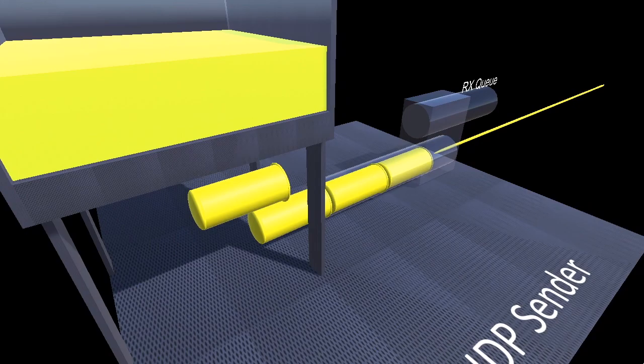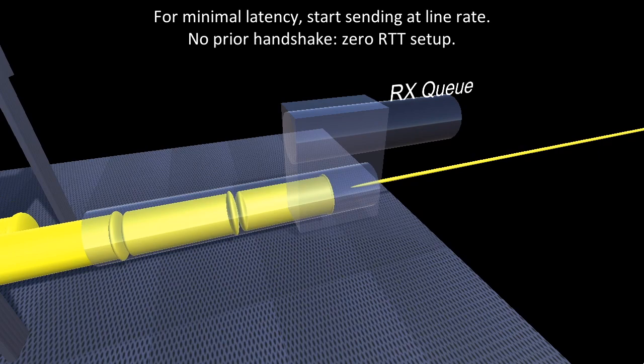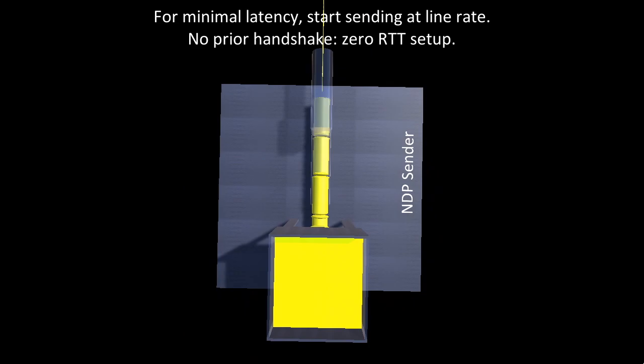Here's a sender. If you really want the lowest latency, there's no alternative to just starting sending at line rate without even a connection setup handshake. Much of the time this will work fine if the network utilization isn't all that high. So what's going to go wrong if we just do that?